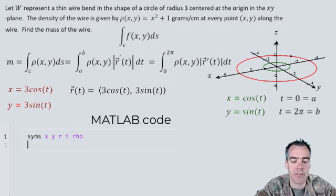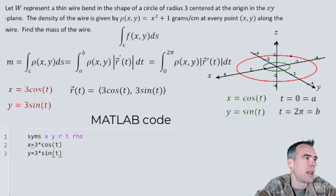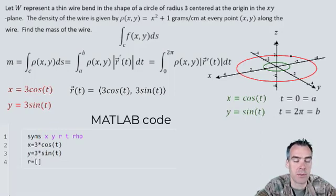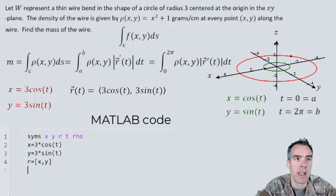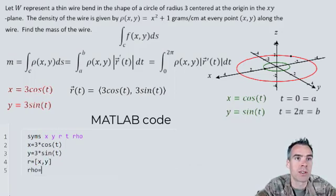Let's define our x, which was 3 times cosine of t, and our y, which was 3 times sine of t. We can define our r, which was just the vector with these x and y components, and we can define our ρ, which was x² + 1.